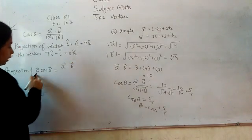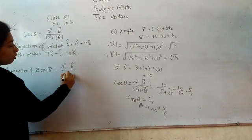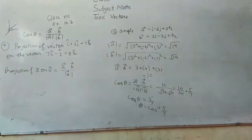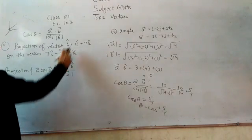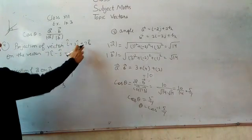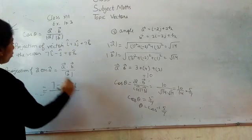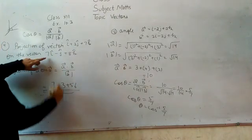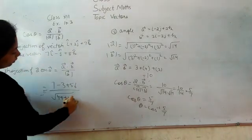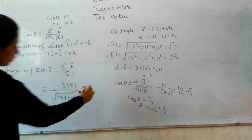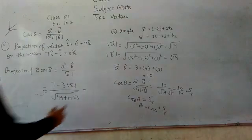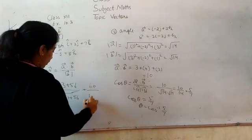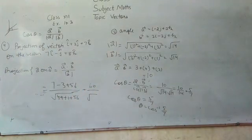The formula is a dot b upon B mode. A dot B: 1 into 7 is 7, 3 into minus 1 is minus 3, 7 into 8 is 56. Upon B mode. B mode will be root of 49 plus 1 plus 64. This becomes 7 minus 3 is 4, plus 56 is 60 upon root 114.